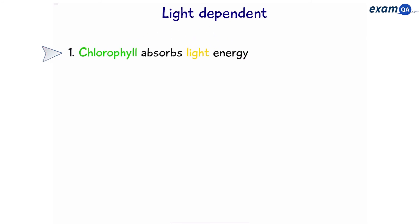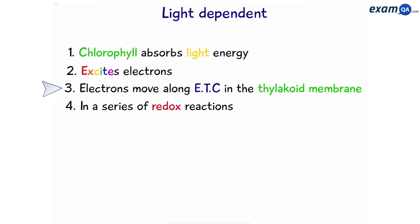Number 1: Chlorophyll absorbs light energy. Number 2: This excites the electrons. Number 3: The electrons move along the electron transport chain in the thylakoid membrane. Number 4: In a series of redox reactions. In other words, things are gaining and losing electrons throughout this whole process.